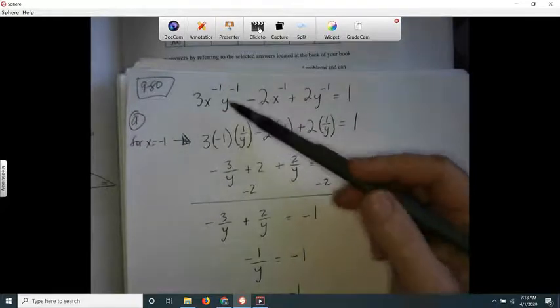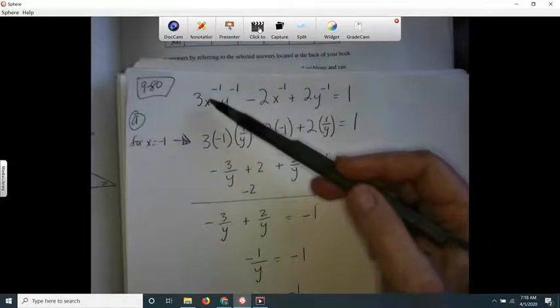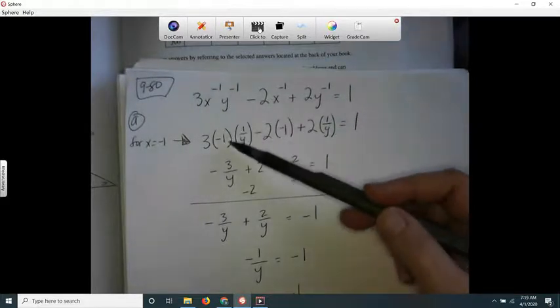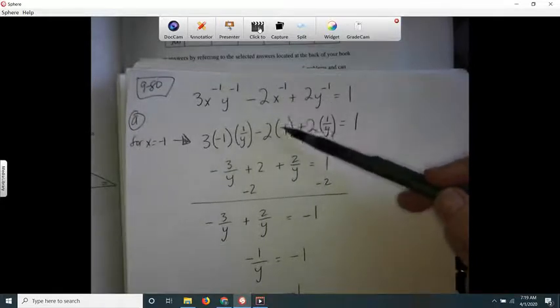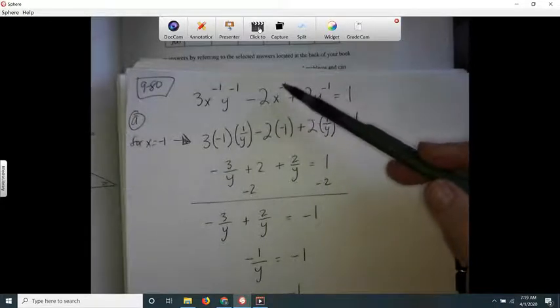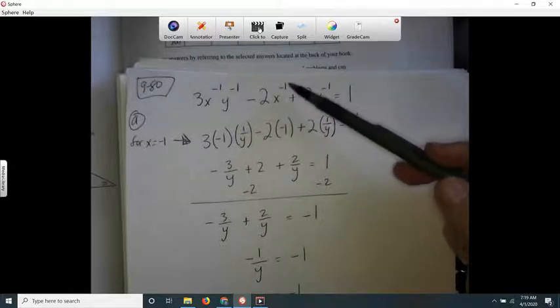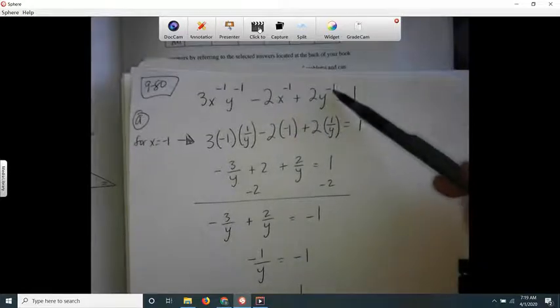And then, like if x is negative 1, negative 1 to the negative 1 is 1 over negative 1. So this turned out to be negative 1, because the reciprocal of negative 1 is still negative 1. These negative 1s just mean reciprocals.